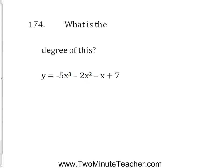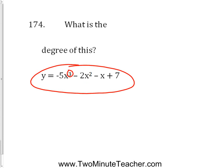What degree does it have? A common misconception is kids think you just add these all up. This last term is a degree 0 because it's like having an x to the 0 there, since x to the 0 equals 1. Anyway, the degree is not an add-it-all-up thing — it's just pick the biggest one and go with that. Since this is a degree 3 and that's the biggest, the degree of this polynomial is degree 3.